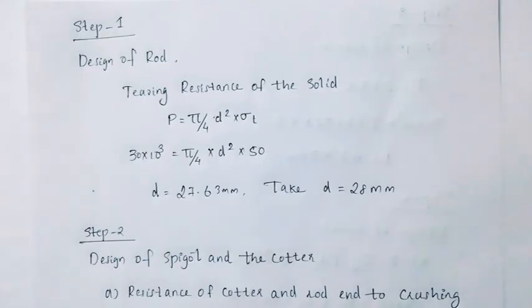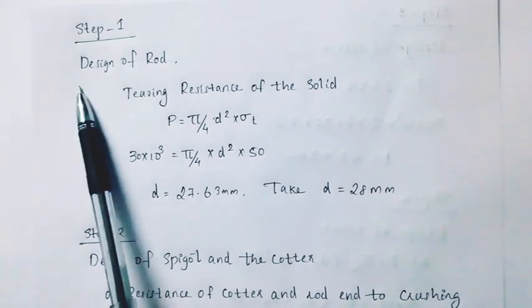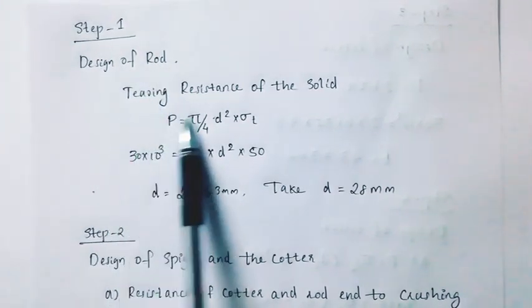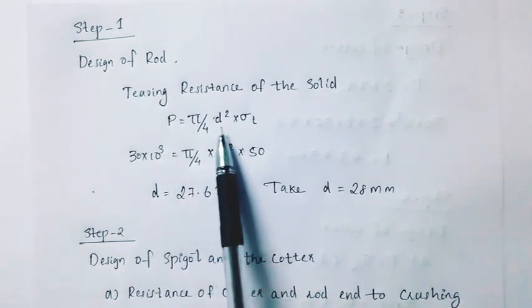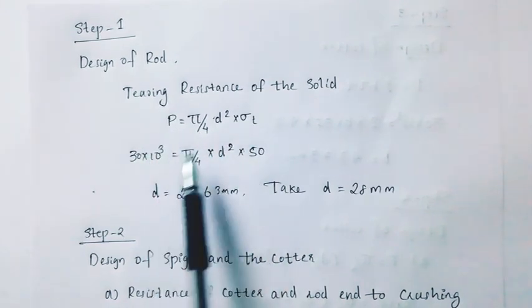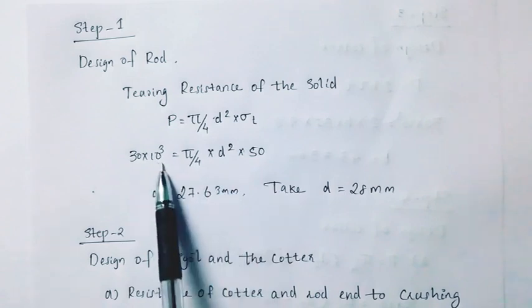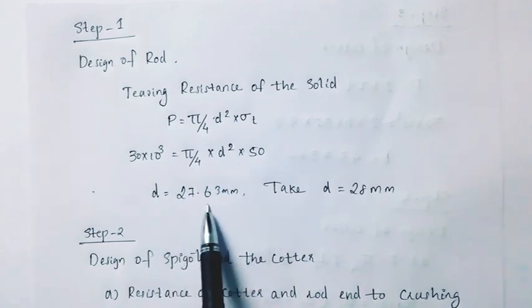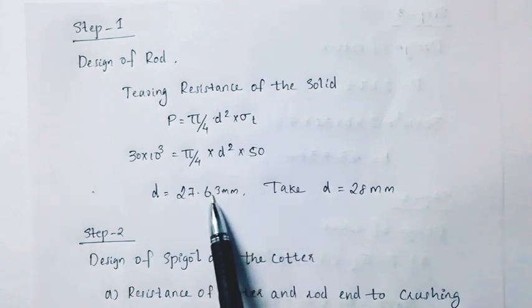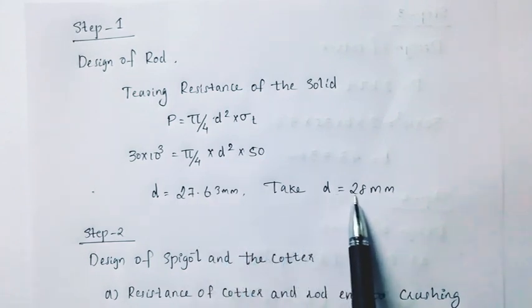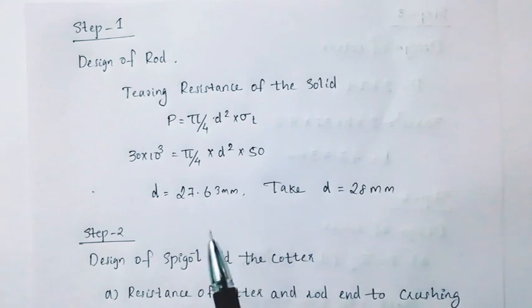Step 1 is the design of the rod. Tearing resistance of the solid: P equals pi by 4 D squared into sigma T. The value of D is 27.63 mm. Take D equal to 28 mm.